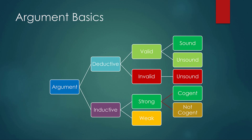If you decide this is probably a deductive argument, the next question is assessing the logic — is it good, bad, or ugly? If it's supposed to be deductive, it's going to be either valid or invalid. You'd ask: logically, if all the premises were true, would the conclusion have to be true? If yes, it's definitely valid. If all the premises could be true but the conclusion could still be false, then it would be invalid.